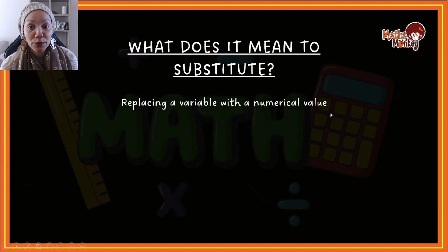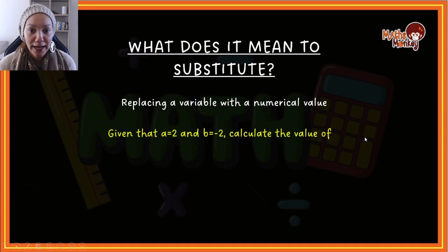Let me give you an example of what this would look like. Given that a equals 2 and b equals negative 2, calculate the value of... This is what a typical test or exam question would look like for substitution. Let's say we had the first expression ab. If you've watched my previous videos you would know that ab simply means a multiplied by b. So we're going to replace every a with a 2 and every b with a negative 2.